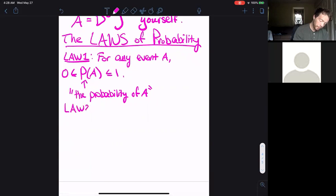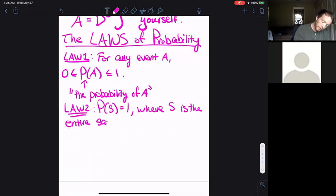Law 2: P of S is equal to one, where S is the entire sample space. I mentioned this before when talking about our probability density model with the normal distribution. All of the probabilities in the whole space need to add up to one. If you look at every single possible event, the probability of something happening in the whole sample space needs to be equal to one.